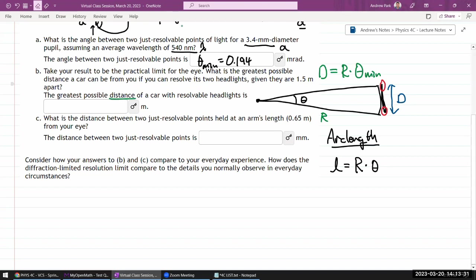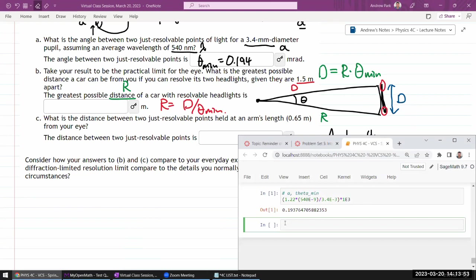So here it's asking for greatest possible distance. So that would be R in the way I lettered my variables. R is equal to D divided by theta_min. And this is the distance D they are giving me. So let me put that into my calculator. So this is part B distance. So D is 1.5 meters, and I'm dividing that by previous output that's underscored in SageMath language.